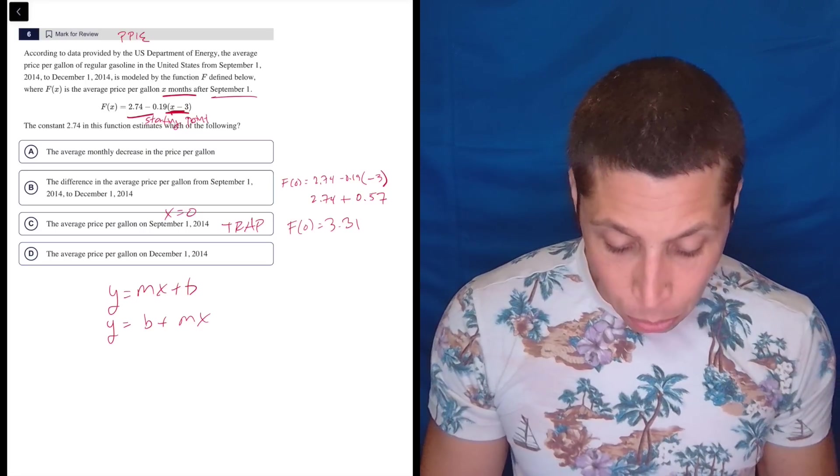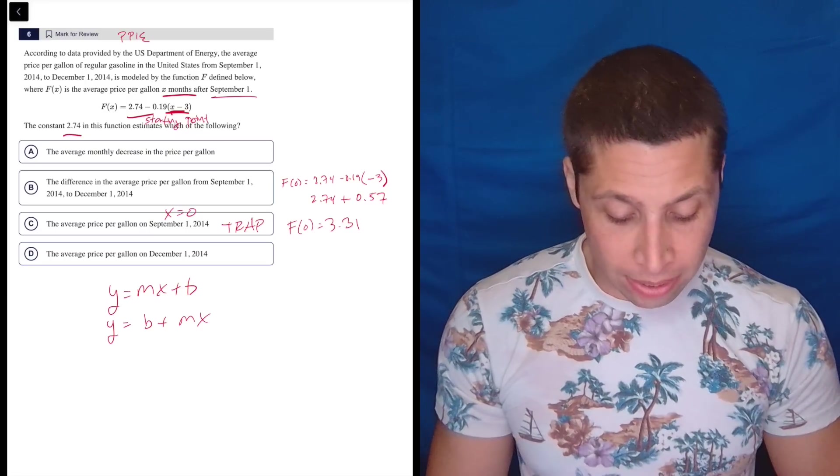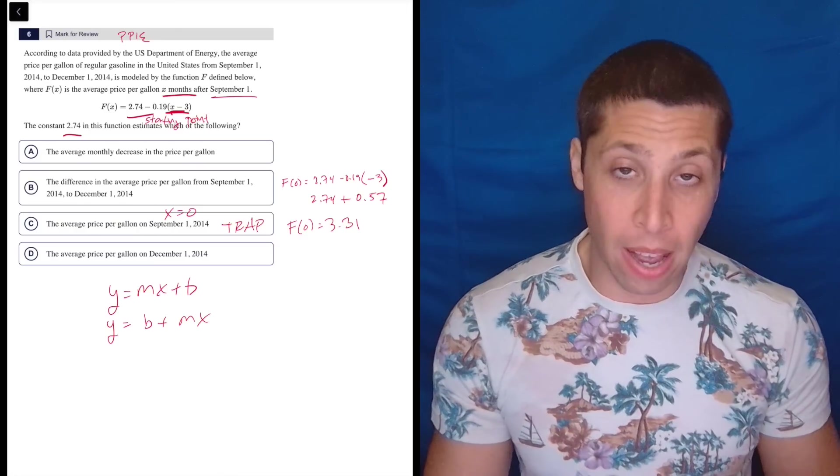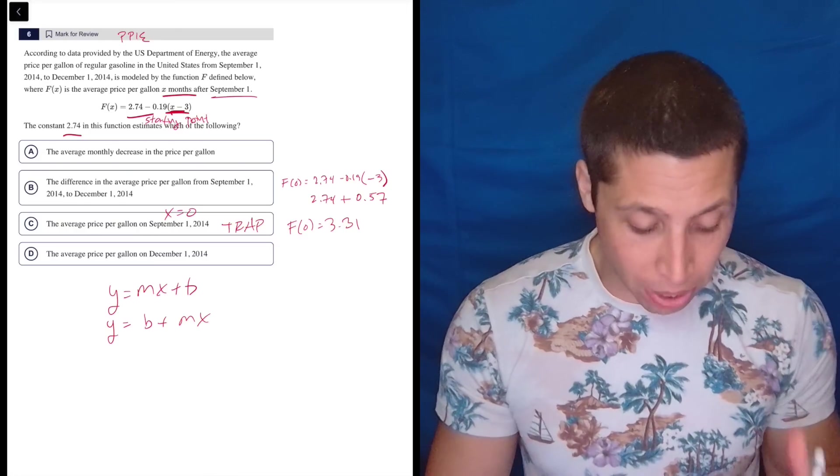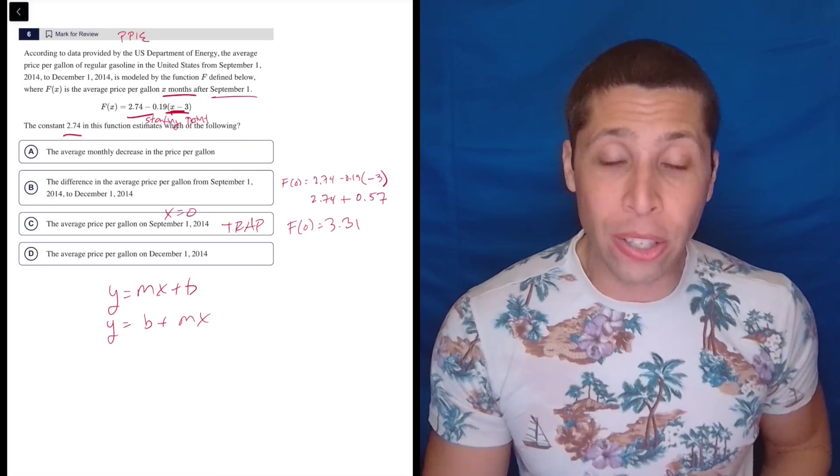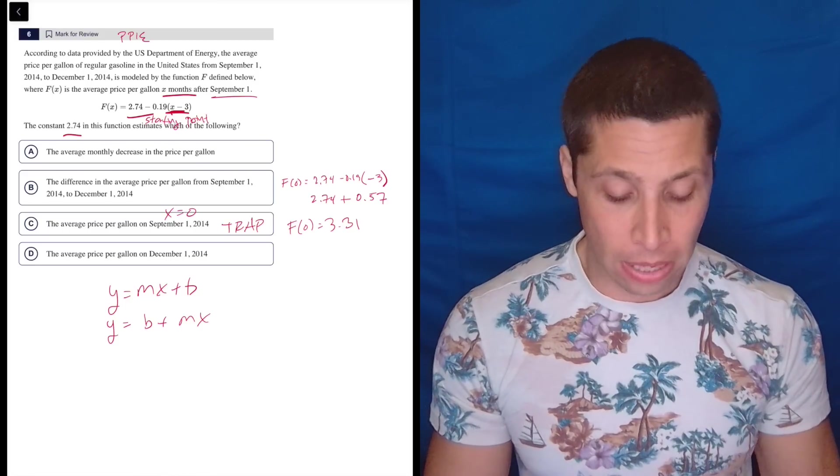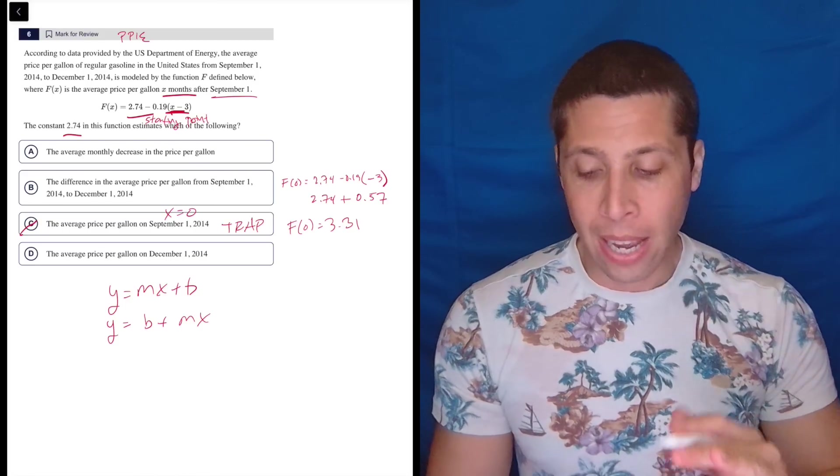So what does 2.74 in this function estimate? It doesn't estimate the price when it's September 1st because the price when it's September 1st, according to the equation, is $3.31.